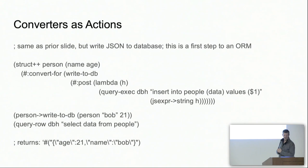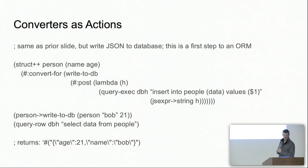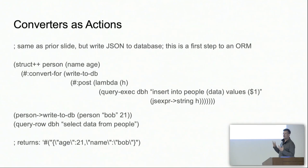Maybe you want to do more than just return the value — maybe you want to actually write it to a database. Here's the same thing as the previous slide, but instead of returning the string I'm actually writing it to a database. This is as simple as passing it a function just like before. You can see at the bottom I call the converter function and then immediately do a query to pull it back from the database, and yes we get a JSON string back.